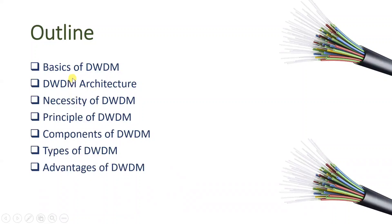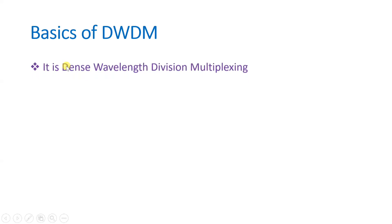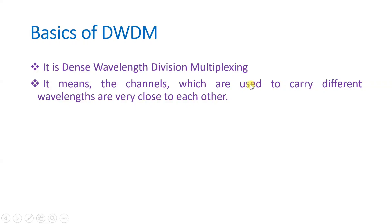Let us begin with the first agenda: basics of DWDM network. DWDM means Dense Wavelength Division Multiplexing. The name itself indicates it — 'dense' means the wavelengths are very near to each other. In this type of network, channel capacity is very high as there are more wavelengths sending signals from transmitter to receiver, indicating higher network capacity.